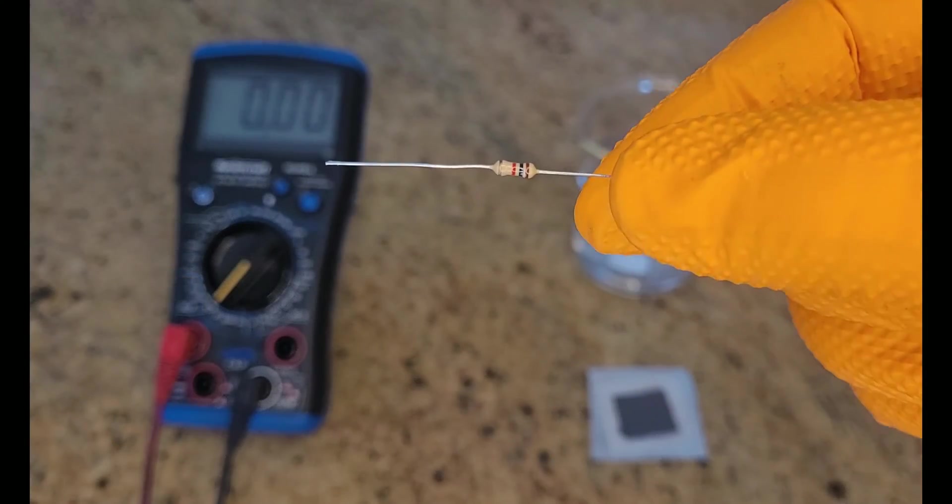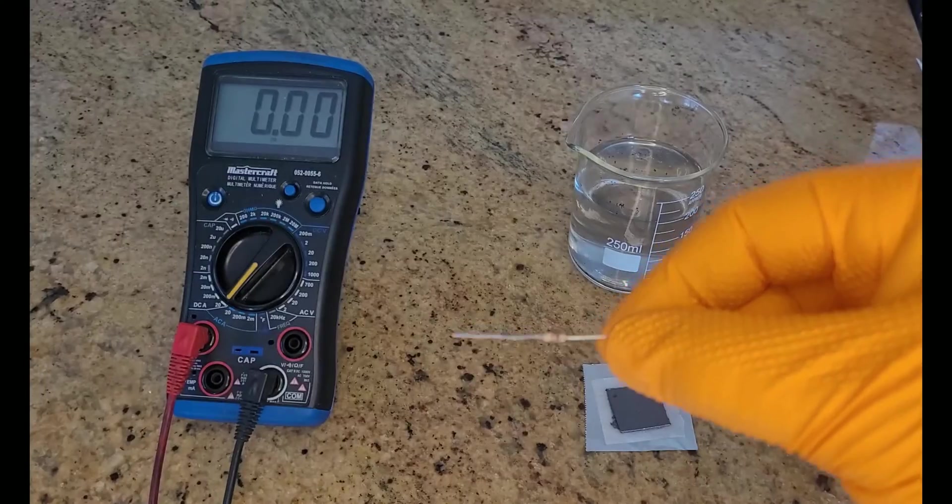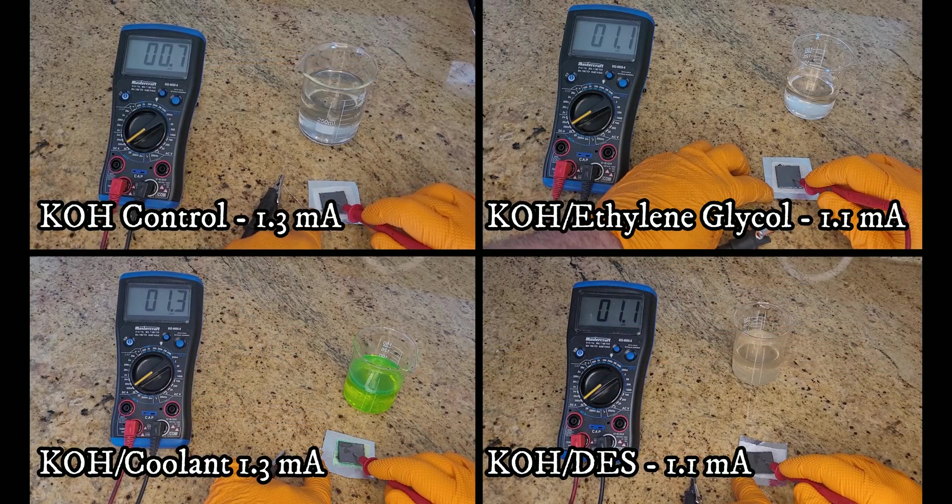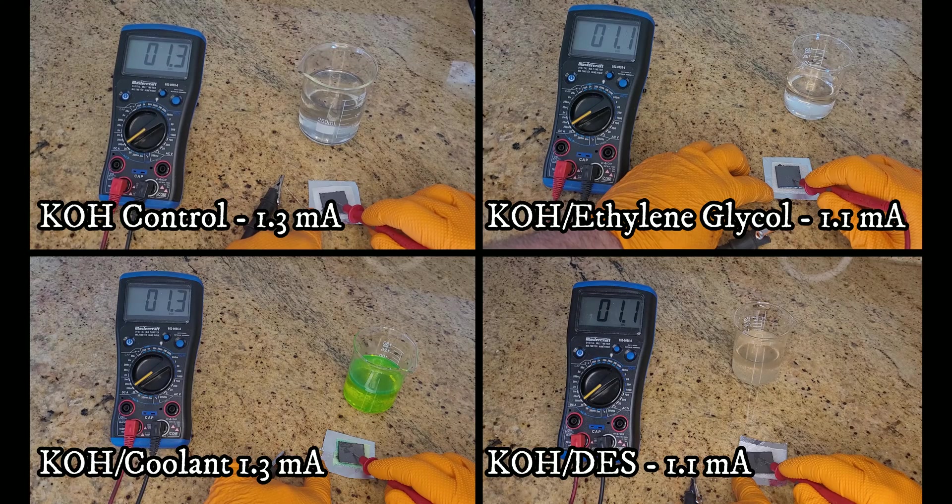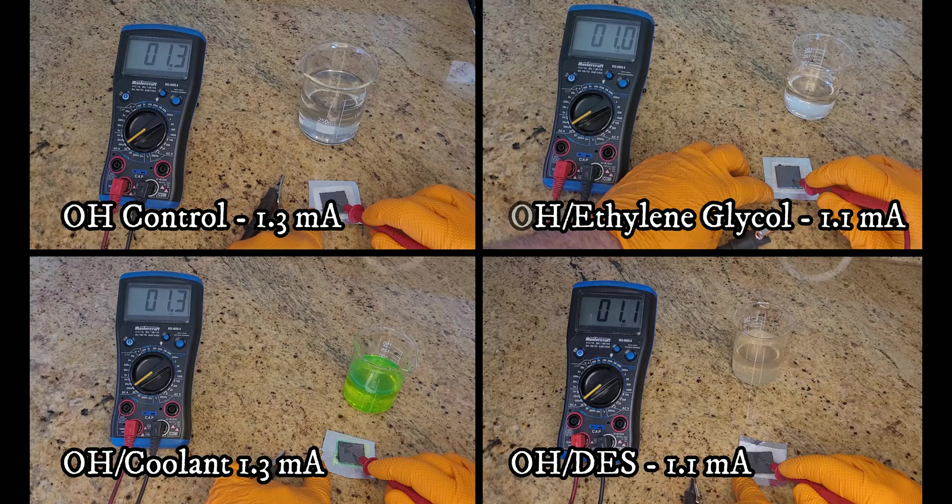For amperage, I performed two tests, one with a 1 kilohm load, and another one with no load. For the load, they all surprisingly performed very similarly, probably because they all have the same voltage potential and can only move so much current through the load as a result.